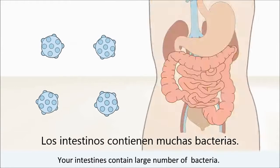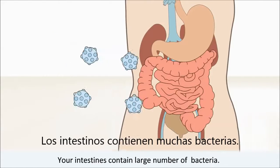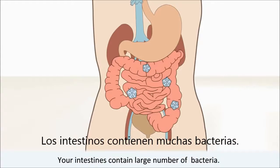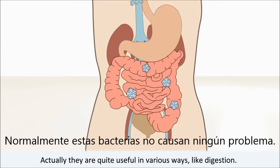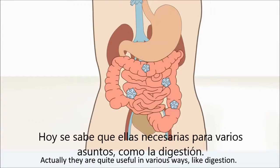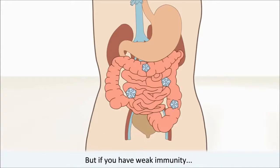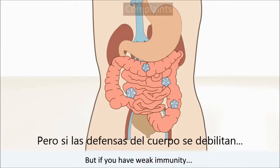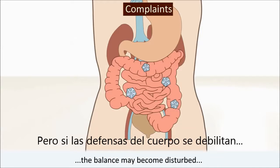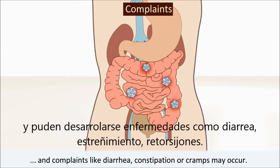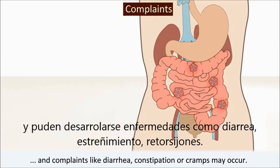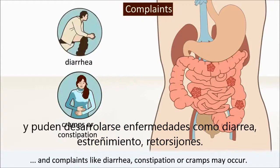Your intestines contain a large number of bacteria. Normally, these bacteria don't cause any problem. Actually, they're quite useful in various ways, like digestion. But if you have weak immunity, the balance may become disturbed, and complaints like diarrhoea, constipation, or cramps may occur.